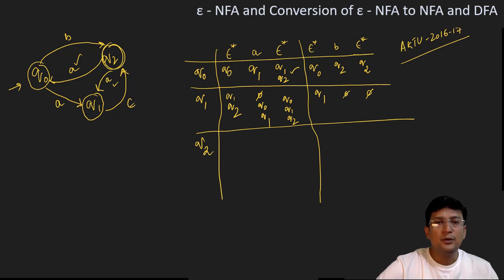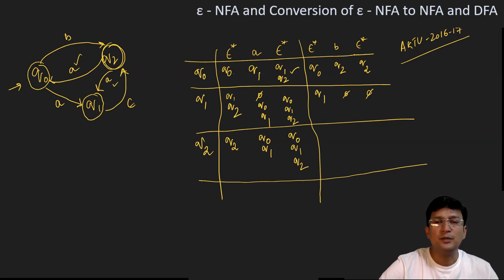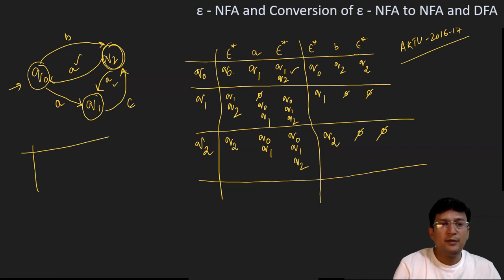Let's compute it for Q2. The Epsilon closure of Q2 means what are all the states it can move to only by getting the symbol Epsilon — it moves to Q2 only. So Q2 on getting symbol A moves to Q0 and Q1, which we have already computed. The Epsilon closure of Q0 is Q0, and the Epsilon closure of Q1 is Q1 and Q2. So Q2 on getting symbol A moves to Q0, Q1, and Q2. The Epsilon closure of Q2 on getting symbol B is not defined, so we take it as phi. Now let's draw the NFA table.